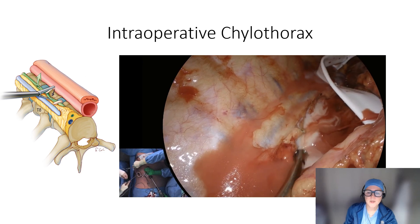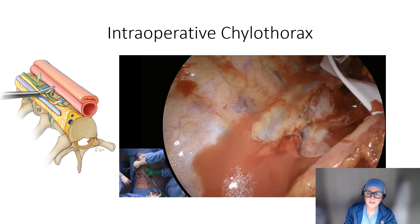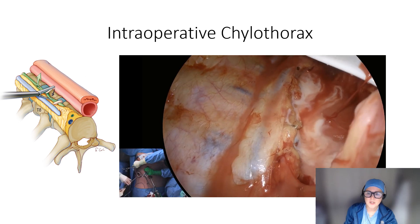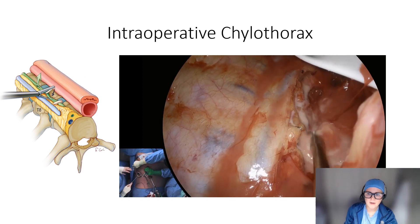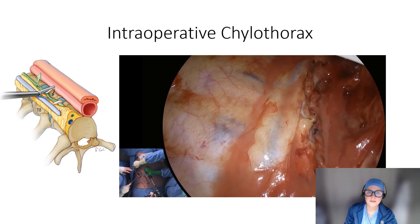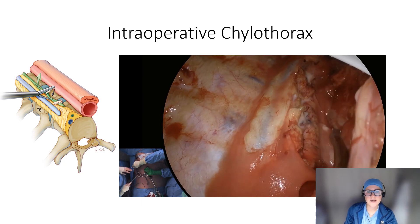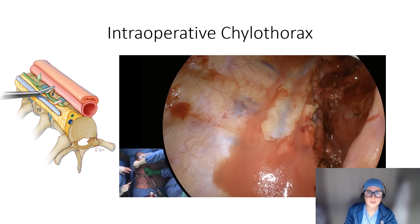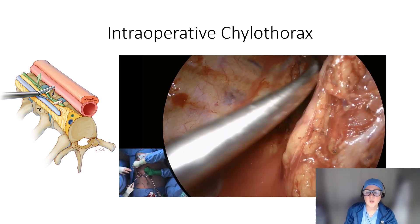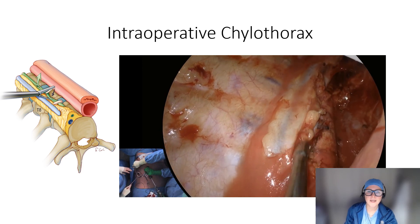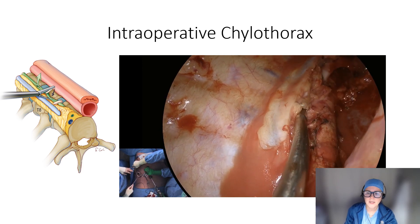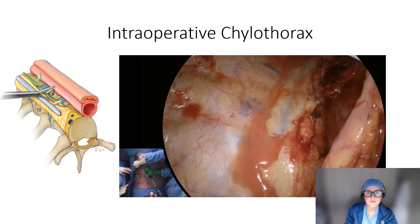Most people, when doing an esophagectomy, do not recommend routine embolization or ligation of the thoracic duct as a standard clinical practice. Manipulation of the thoracic duct can sometimes cause the leakage in the first place. I typically only clip or ligate the thoracic duct during esophagectomy if I see active leakage of chyle.